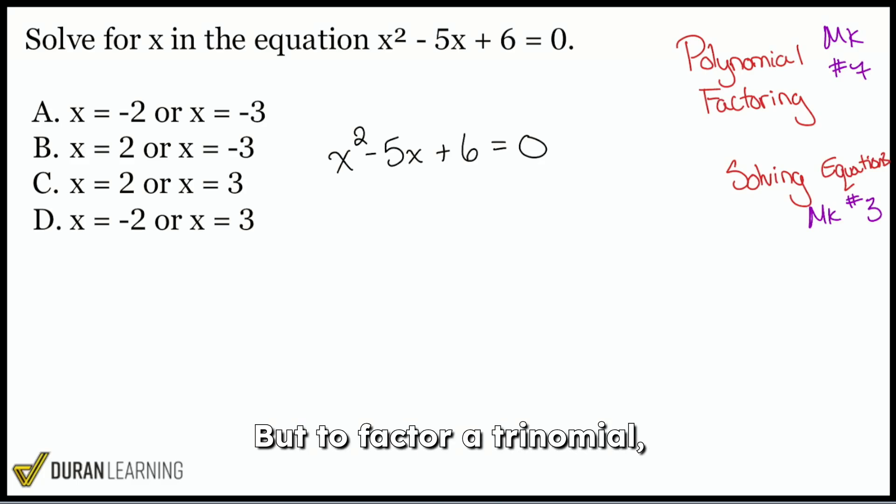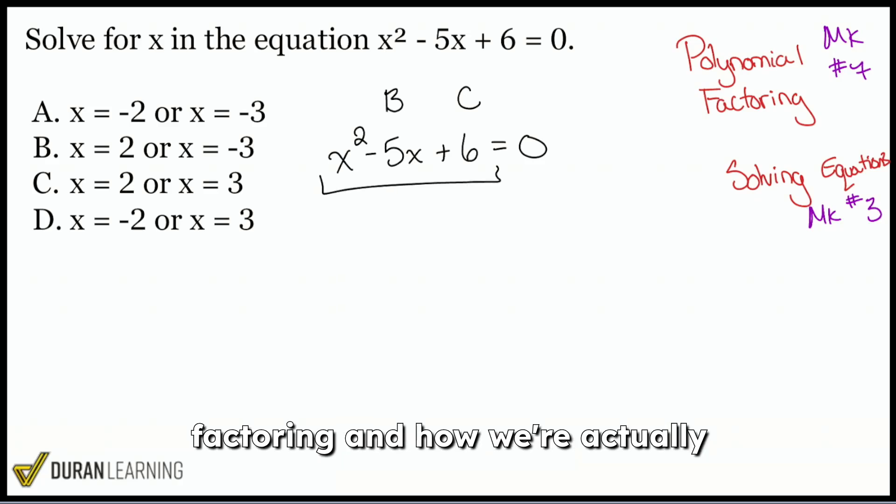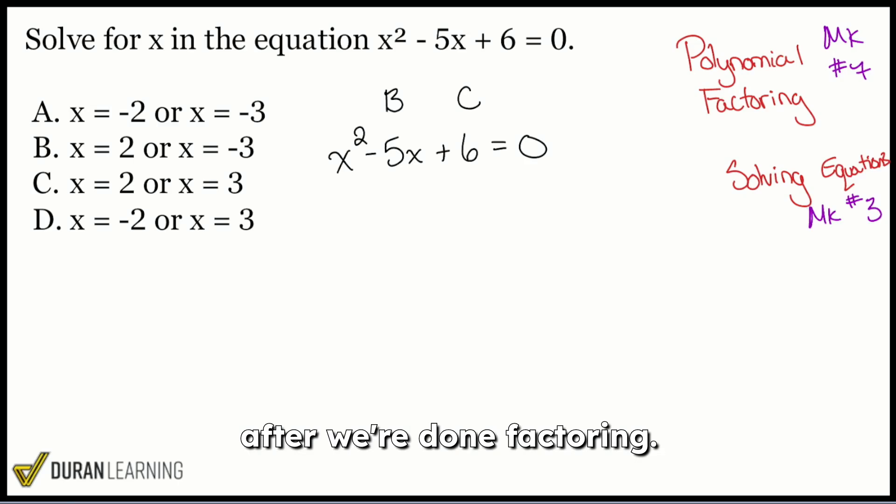But to factor a trinomial, you may have heard me say, find the factors of C that add up to B. And that's the main way that we're going to get this done. So let me just walk you through step number one in terms of the factoring and how we're actually going to solve this equation after we're done factoring.